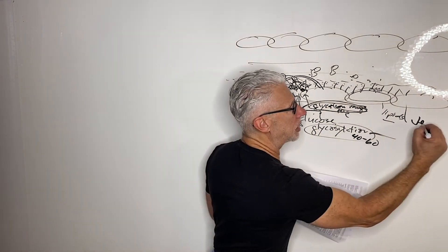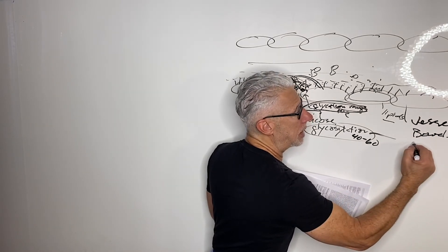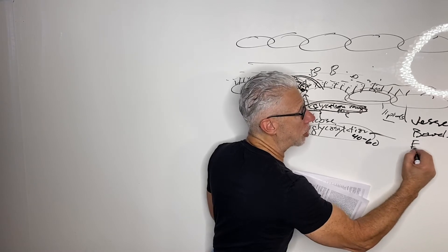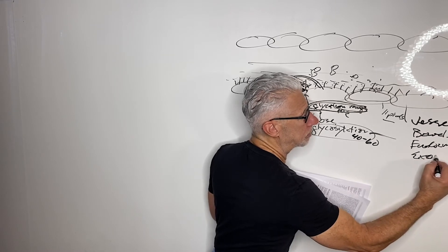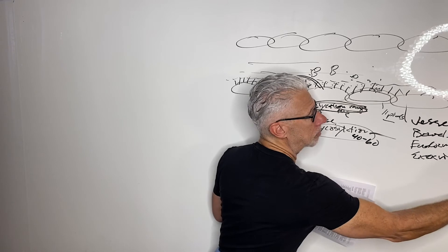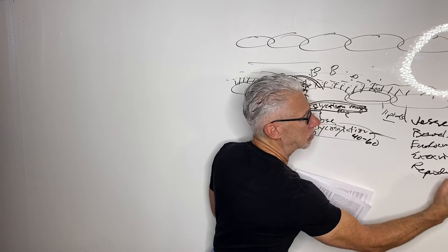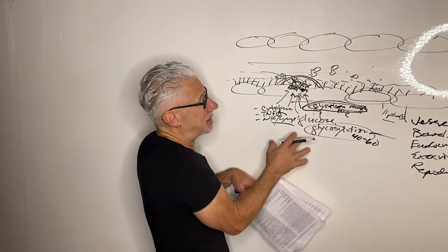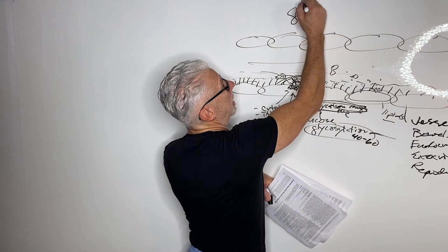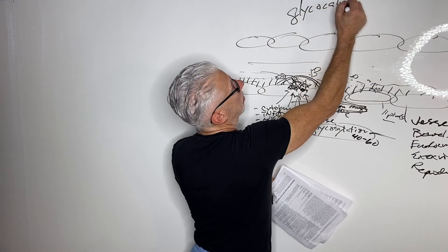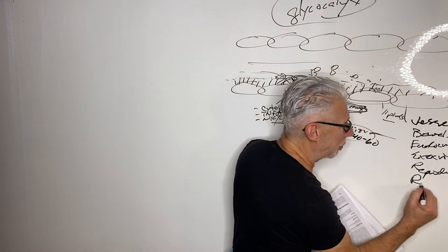Whether this is in a vessel, in the bowels, in a tubular structure within an endocrine gland or an exocrine gland, a reproductive organ — all of this is getting damaged by the simple concept that this glycosaminoglycan glycocalyx layer is being damaged everywhere in our body, including the renal system.